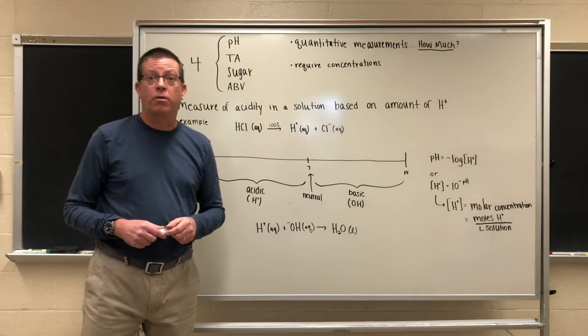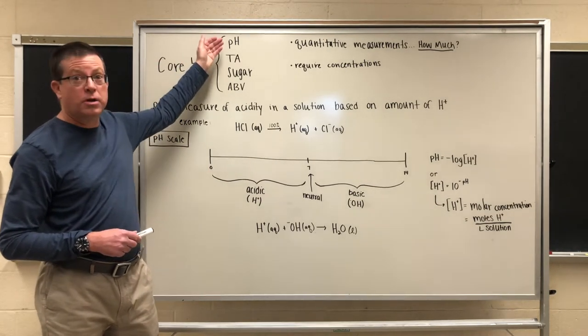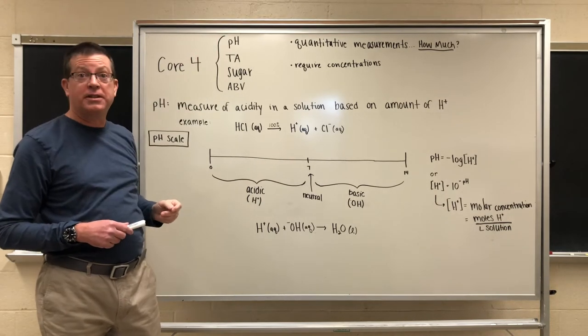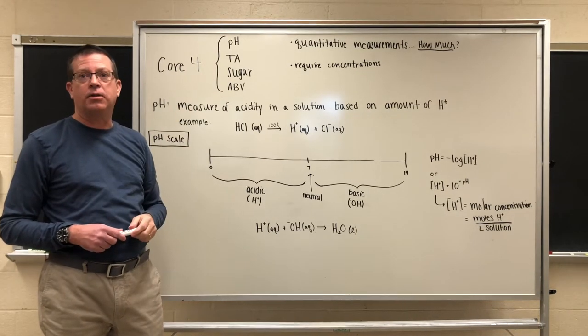If you were to order a core four analysis from us you would get per brew measurement of pH, titratable acidity, sugar, and also ABV which is alcohol by volume.